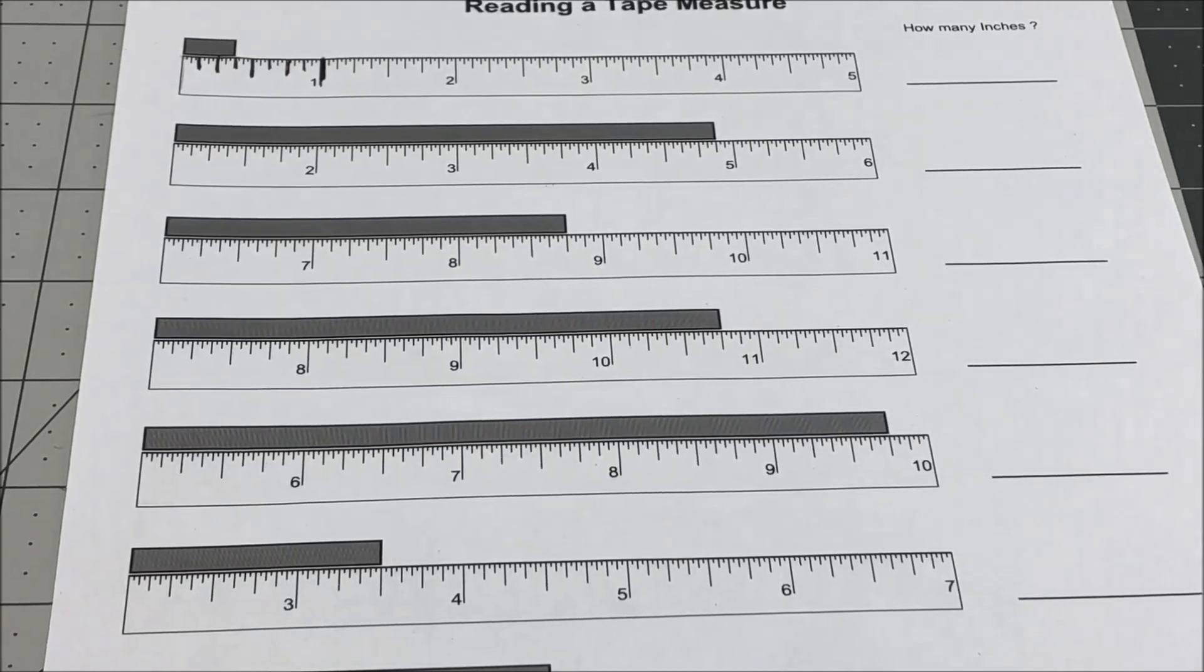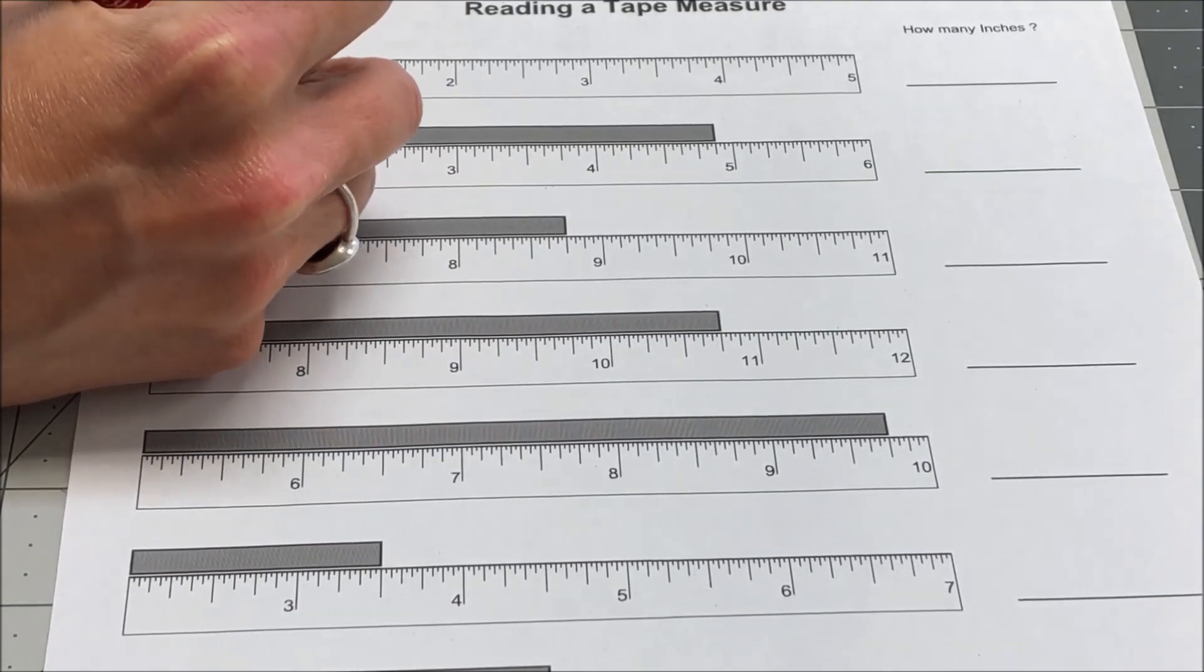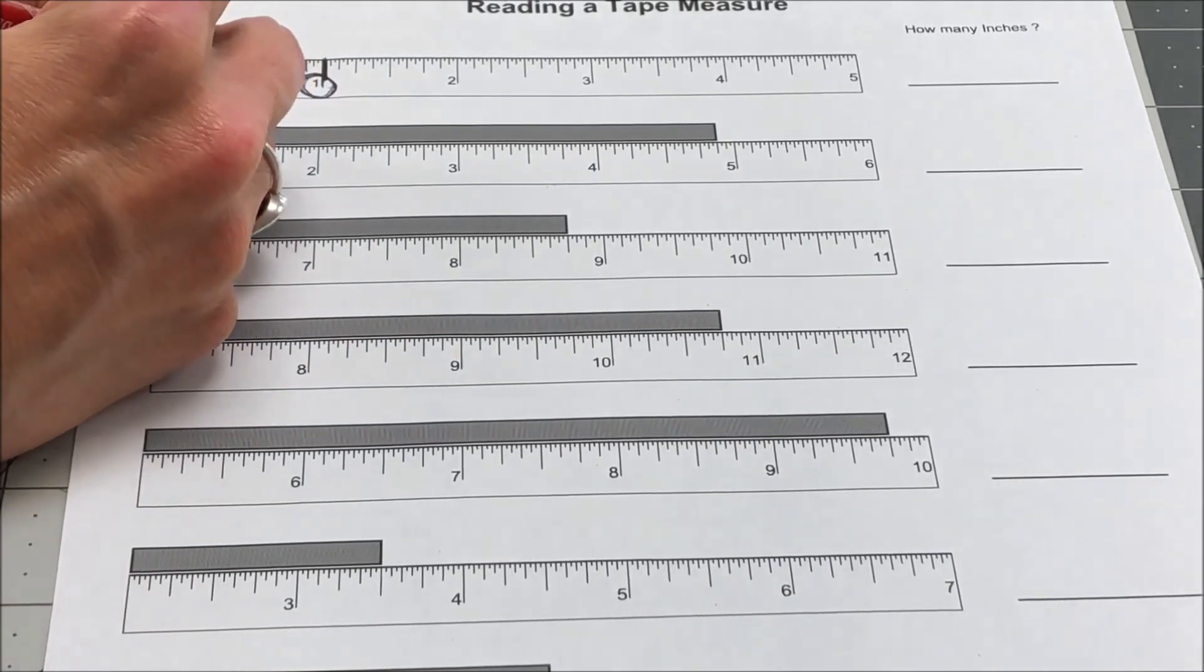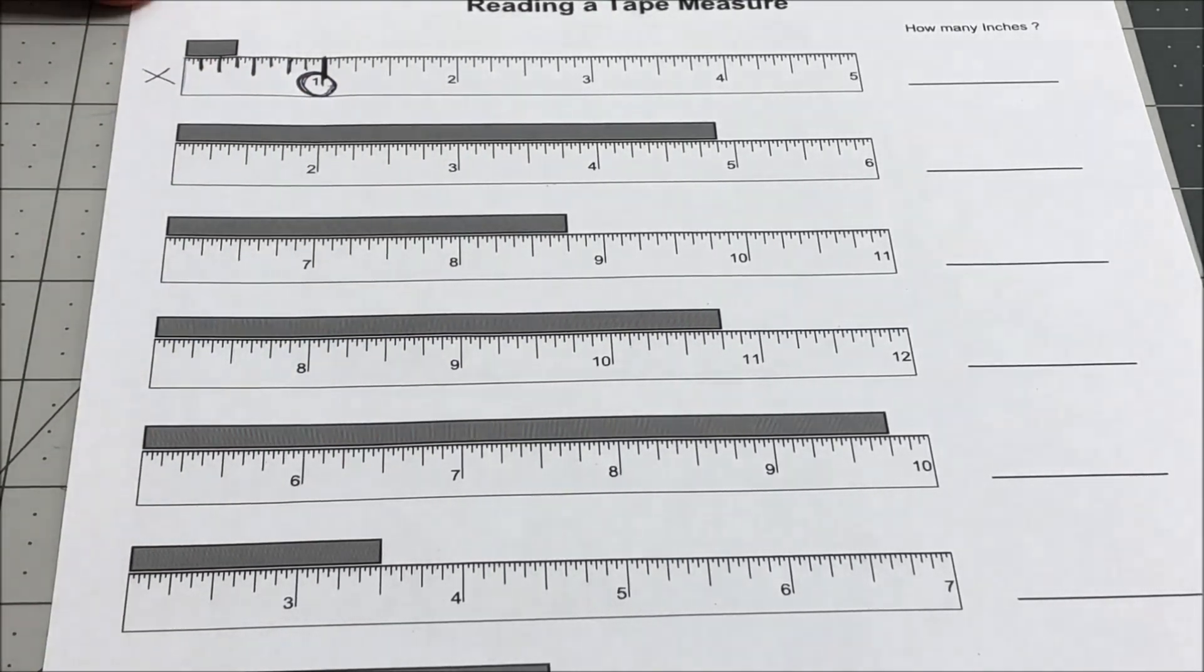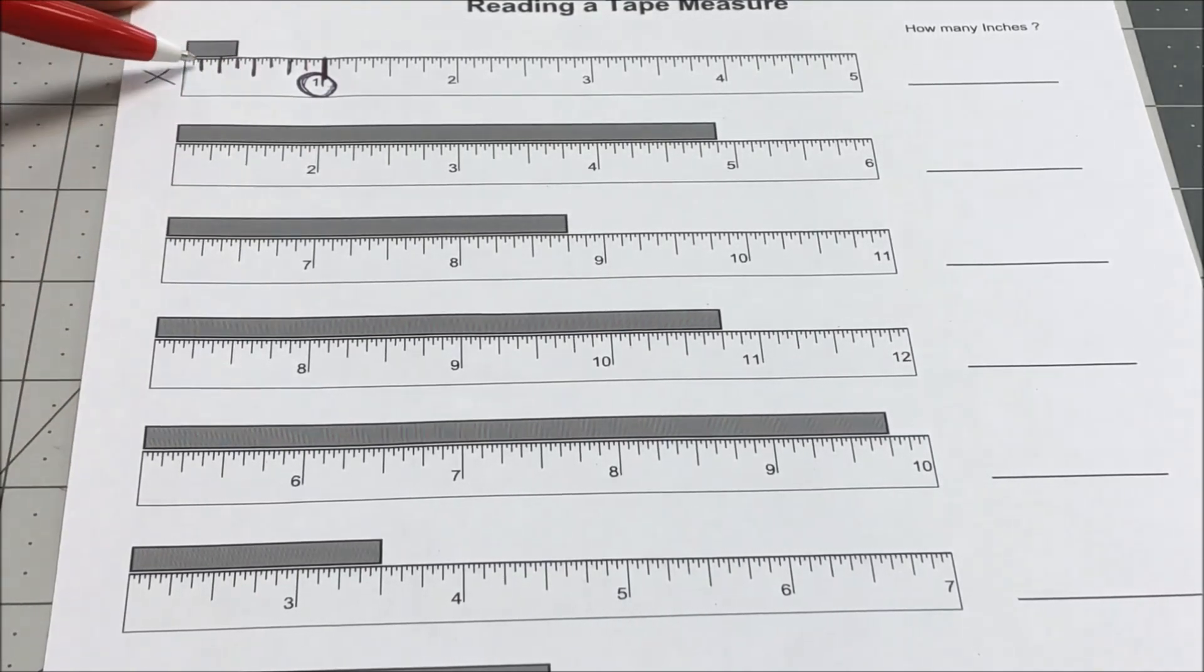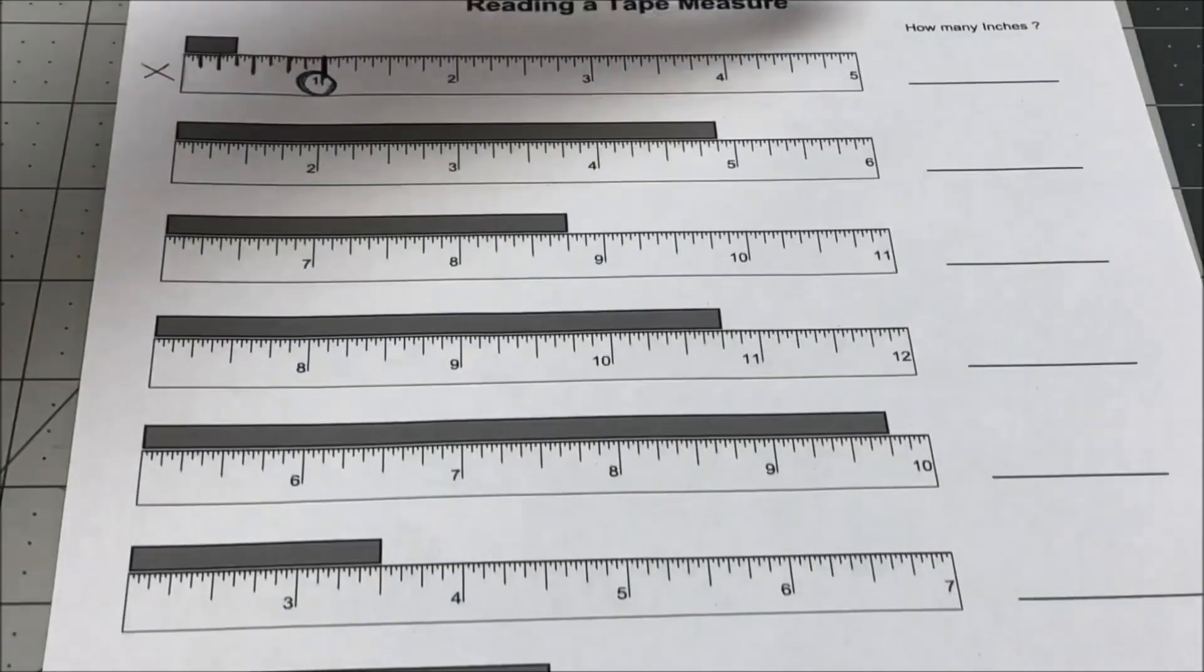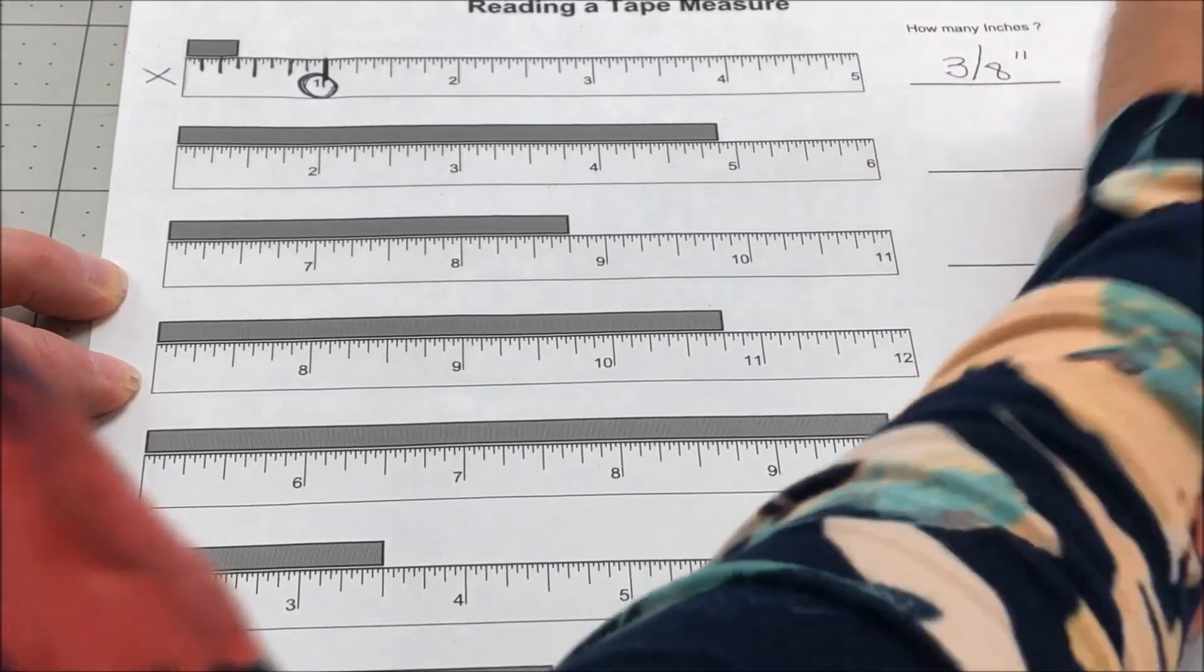So for each of these examples, you're first going to look right here and see what the whole number is for your inches. Well, we're starting there. That is a 1. So I don't need a whole number. So I'm going to put an X here. What you'll then do is look at this box right here. So this box ends at the 1, 2, 3/8th mark. So that is my answer. Under how many inches, it is 3/8ths of an inch.